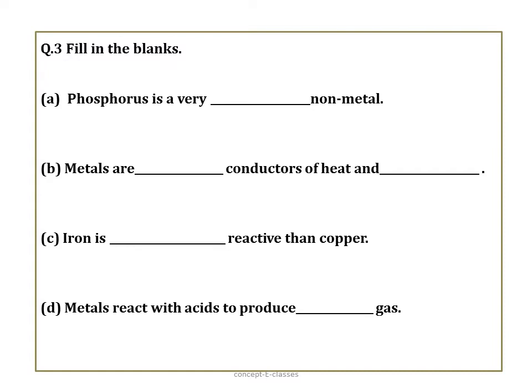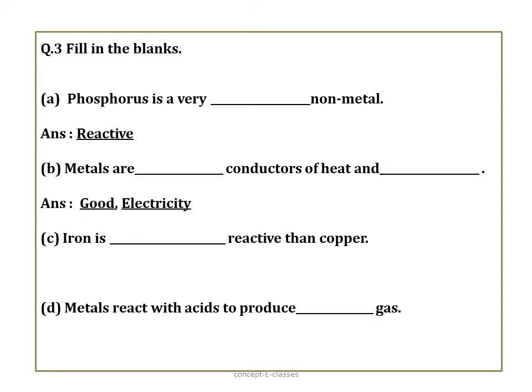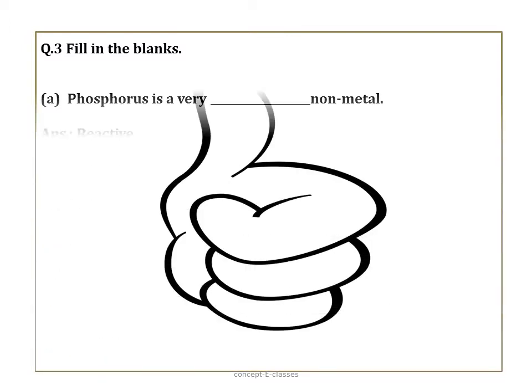Question number three — fill in the blanks. Phosphorus is a very reactive non-metal, as it catches fire easily when exposed to air. Metals are good conductors of heat and electricity, whereas non-metals are poor conductors. Iron is more reactive than copper — we saw an experiment where iron displaces copper from copper sulphate solution, forming ferrous sulphate. Metal reacts with acid to produce hydrogen gas, whereas non-metals do not react with acids at all.